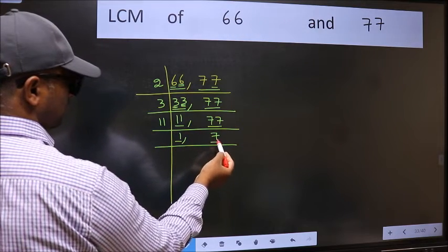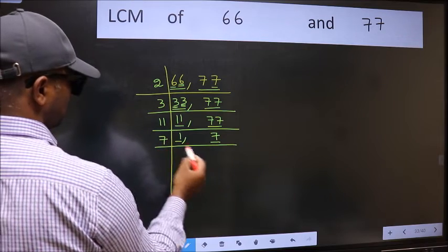Now we got 1 here, so focus on the next number, 7. 7 is a prime number, so 7 divided by 7 is 1.